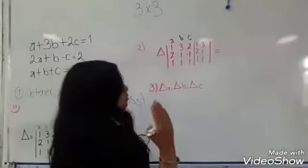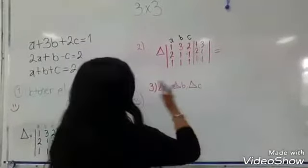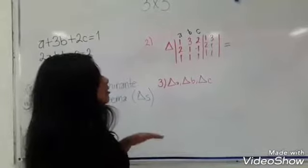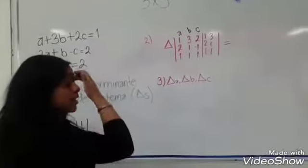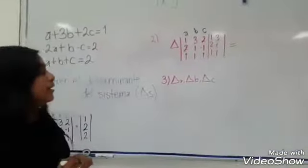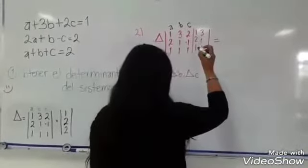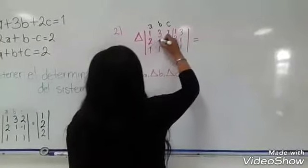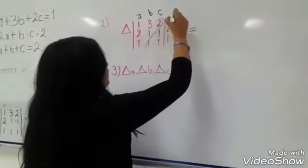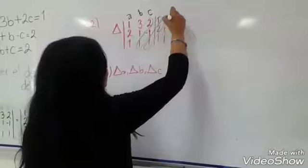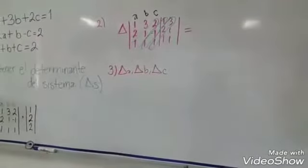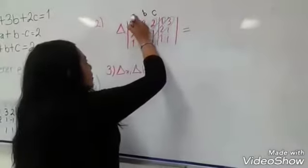Debes de elegir si vas a buscar las tres líneas de izquierda a derecha o de derecha a izquierda. En este primer paso es libre, puedes escoger. Pero si escoges de izquierda, cuando se saquen los demás valores de las demás variables, vas a tener que hacerlo todo de izquierda. En este caso yo lo voy a hacer de izquierda. Vamos a empezar a sacar las primeras tres líneas que se forman y las resaltamos con un color distinto. Posteriormente se tiene que sacar la otra línea horizontalmente, de la misma manera.